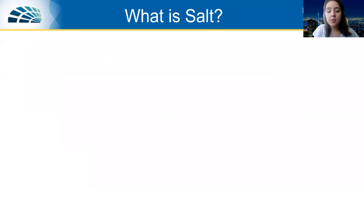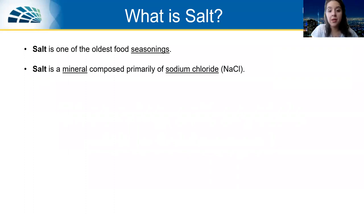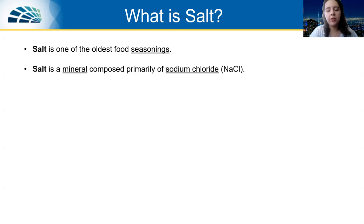First of all, we want to know what salt really is. I'm sure you're already familiar with salt, but let's think about it. Salt is one of the oldest food seasonings. There are different types of salt — it's a mineral composed primarily of sodium chloride, and there might be some other elements in it. The crystal structure of salt is typically called rock salt, which is one of the structures that sodium chloride belongs to.